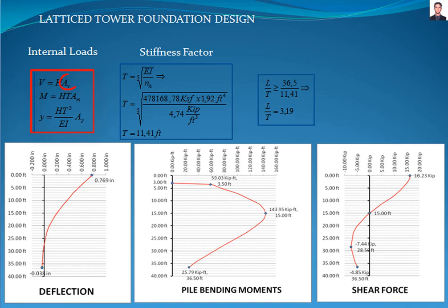Where V, M, and y are the shear force, bending moment, and deflection respectively. A_V, A_M, and A_y are tabulated factors found in specialized books. H is the horizontal force and T is the stiffness factor. The stiffness factor is calculated with this equation for normally consolidated clays, where EI is the flexural stiffness of the pile and N_H is the constant of modulus of subgrade reaction, with a value of 4.74 kilopounds per cubic foot for normally consolidated clays, resulting in T equal to 11.41 feet. Verifying whether it is a rigid or flexible pile by dividing the pile length by the stiffness factor gives 3.19, which means it is on the flexible side but sufficiently rigid to be analyzed in the elastic range.